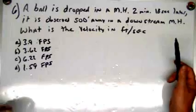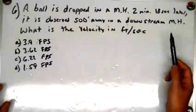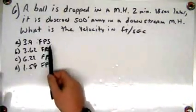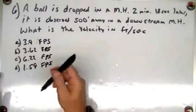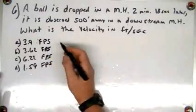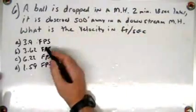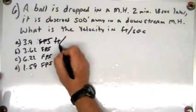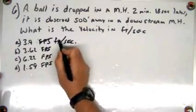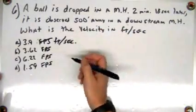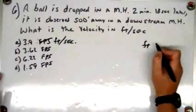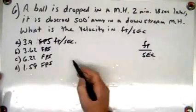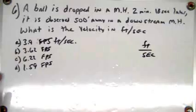First thing we're going to do is take a look and simplify the problem. I'm going to take a look at the choices — the answers are in FPS, or feet per second. Although the question used FPS, I'm going to write it out as feet per second, because it gives me the formula. I need to find out how many feet and how many seconds — feet divided by seconds.